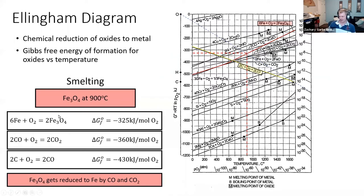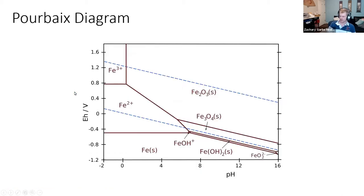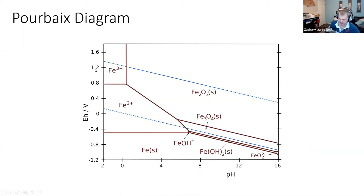Another phase diagram is the Ellingham diagram, which can tell you what species will reduce or oxidize other species at different temperatures and different partial pressures of oxygen. For example in smelting, we take iron oxide ore and want to reduce it to iron metal using carbon. Carbon turns into carbon monoxide, and carbon monoxide reduces iron oxide into iron metal. The Pourbaix diagram is seen more in chemistry — I use it for some syntheses I do — it's more for aqueous chemistry involving water and ions dissolving in solution, but it's a type of phase diagram.